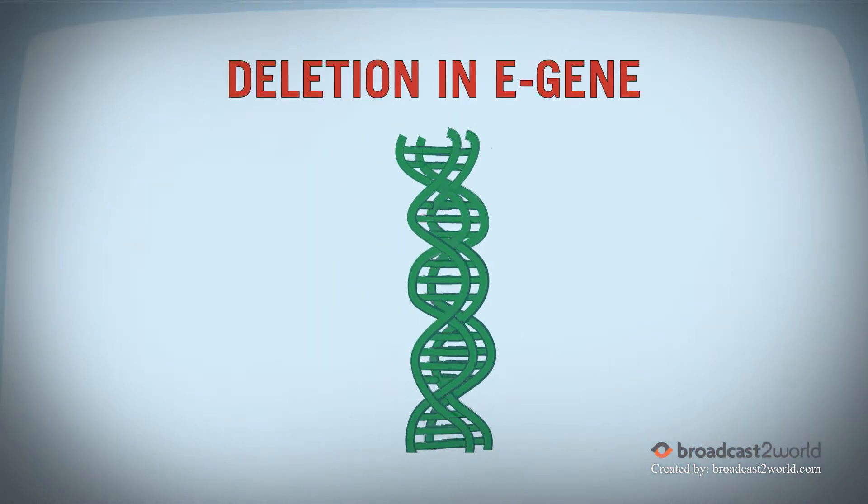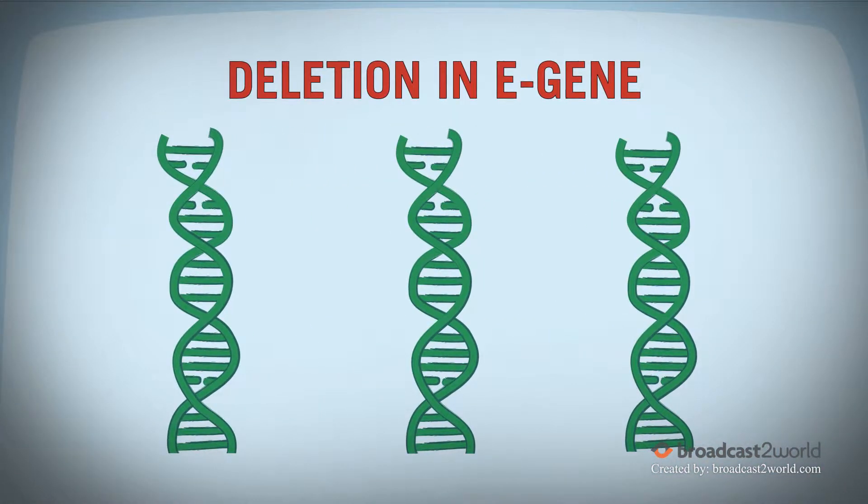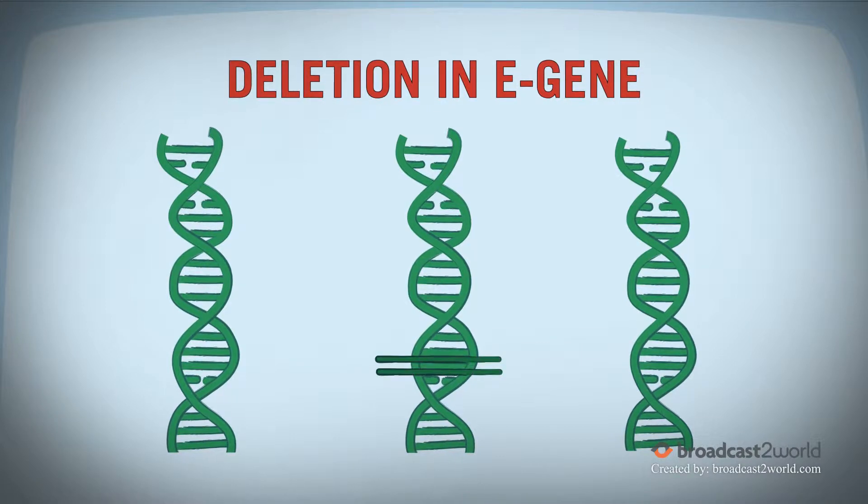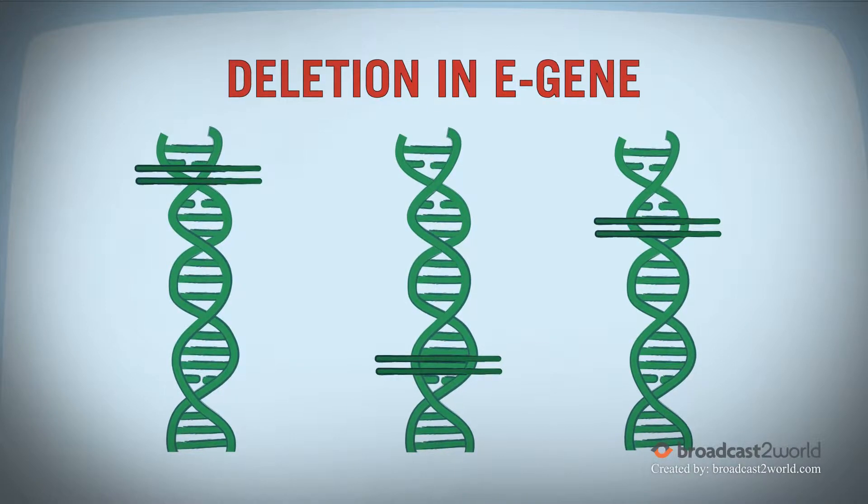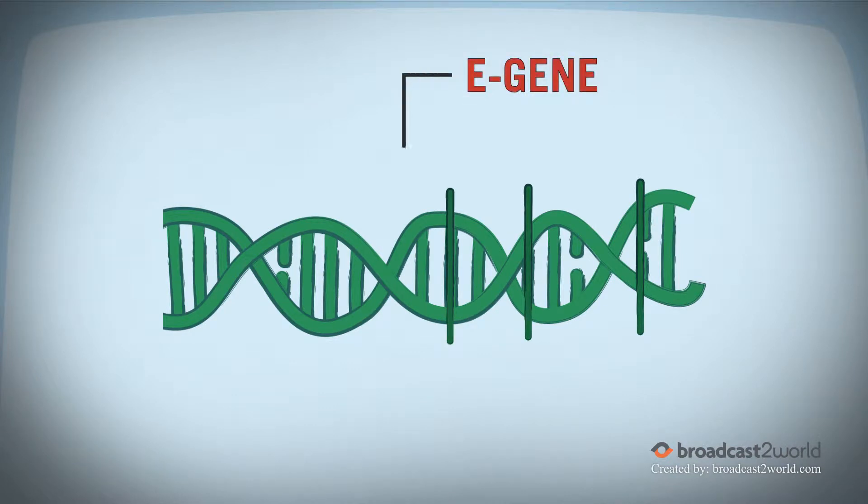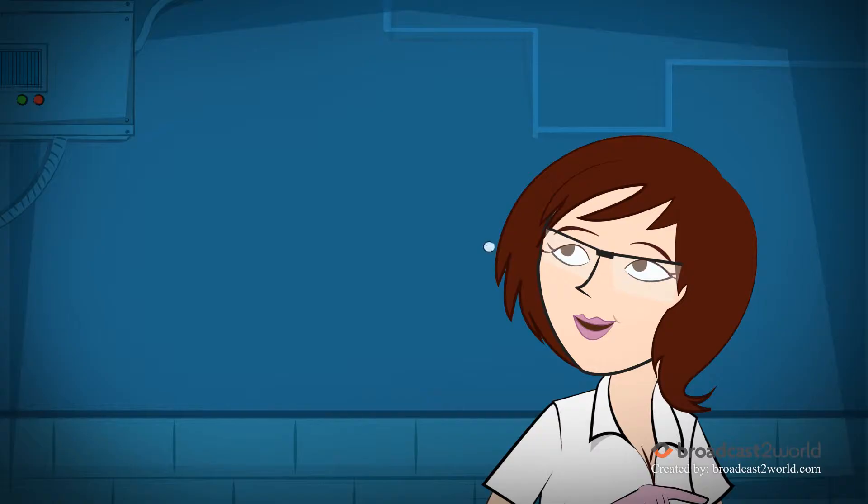She'll make a series of constructs with different deletions in the E gene. Each mutant will have one or more missing regions. She'll compare the functional properties of the different mutant proteins to assign possible roles to the deleted regions.